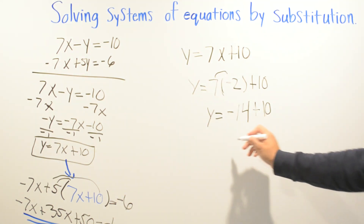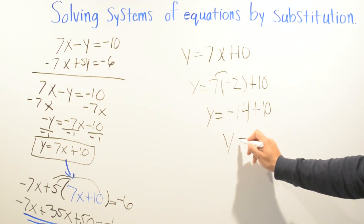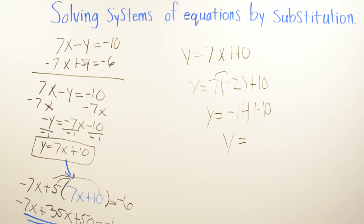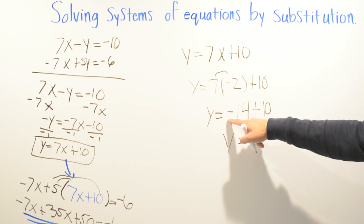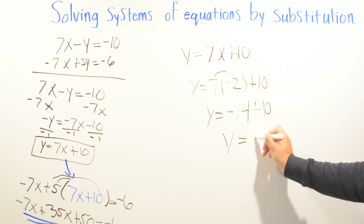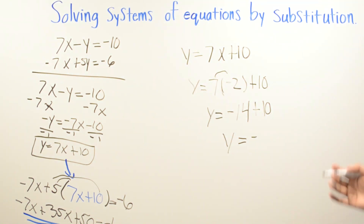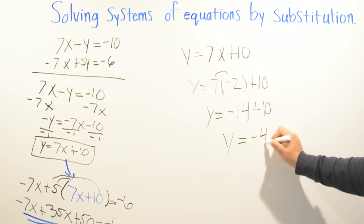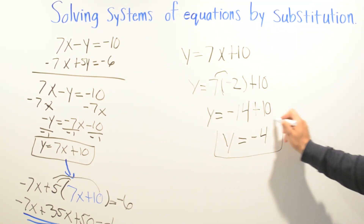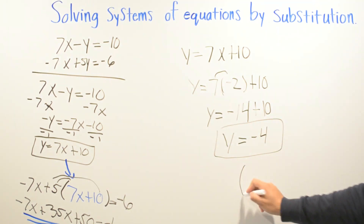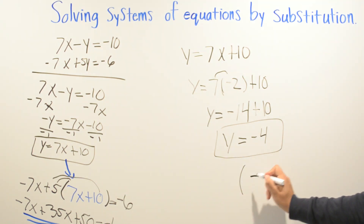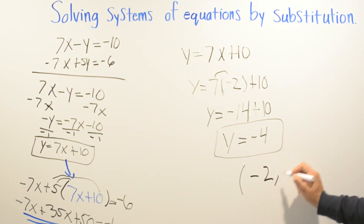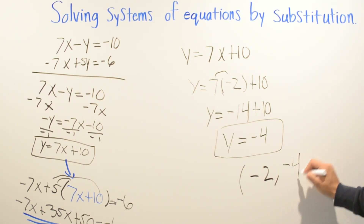We have two different signs so we subtract. 14 is bigger and has a negative sign, so our answer is negative. 14 minus 10 equals 4, so y equals negative 4. Our final answer is (negative 2, negative 4).